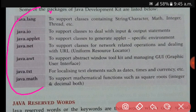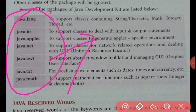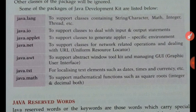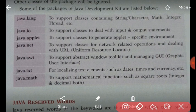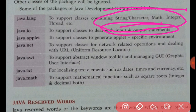These are some examples of packages: java.lang and java.io. Each package has a different kind of work. For example, java.io is used to deal with input and output statements, and java.lang is used to support string, character, integer, thread, and similar kinds of classes.